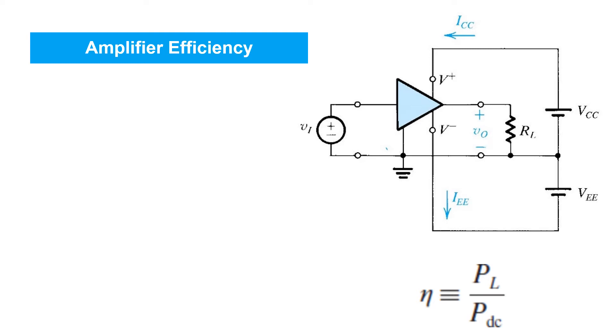Obviously, energy is conserved, so all the power being delivered into the amplifier, which we said is PDC plus PIN, has got to be equal to the power delivered to the load, PL, and whatever is not delivered to the load must be dissipated in the amplifier.